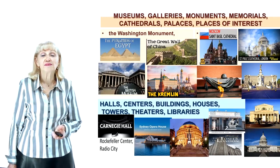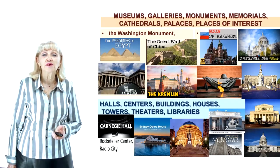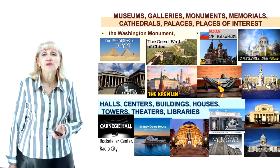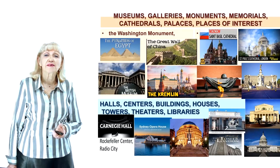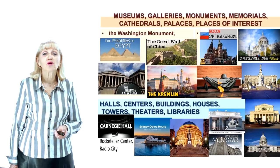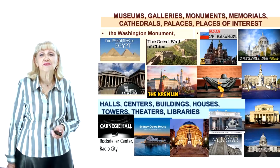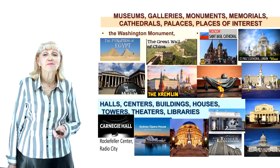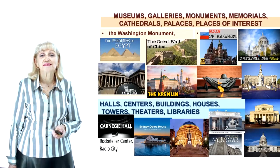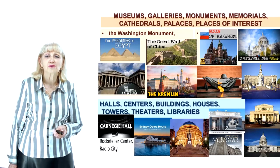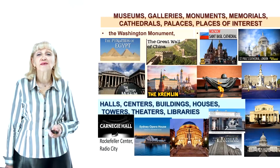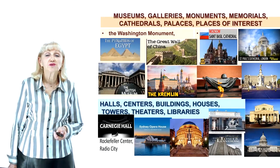But if a building or institution has a unique name but is not named in someone's honour, 'the' is used — for example: the Winter Palace. The article 'the' is needed for halls, centres, buildings, houses, towers, theatres and libraries: the Royal Albert Hall, the Capitol Building, the Sydney Opera House, the Tower of London, the Bolshoi Theatre, the British Library, the Lenin Library. If a store, café, restaurant, bank, hotel or any organisation is named after someone's name with the ending S or apostrophe S, the article is not needed — for example: McDonald's.